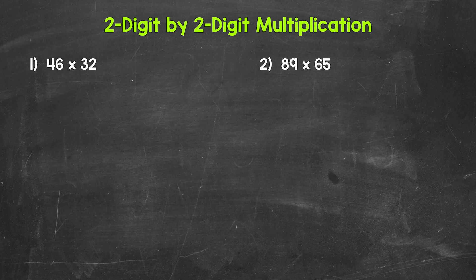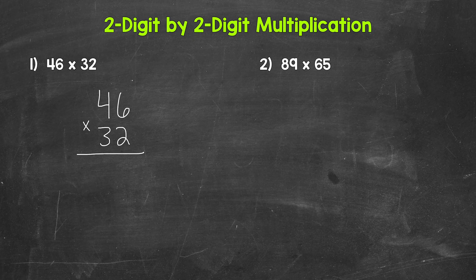Let's jump into number one, where we have 46 times 32. We'll start by lining this up — 46 times 32 — just lining up the places. The six and the two are in the ones place, and then the four and the three are in the tens place.